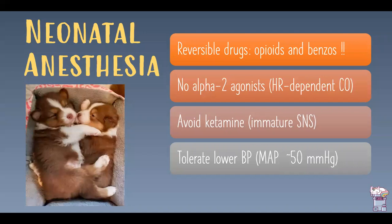For neonatal and pediatric anesthesia, reversible drugs are among the best options. Alpha-2 agonists should only be used at specific ages. Avoid ketamine in very young neonates — it's more acceptable in older pediatric patients, but neonates have an immature sympathetic nervous system and ketamine's sympathomimetic effects are less appropriate. You can tolerate a MAP in the 50s, especially in patients less than six months of age.